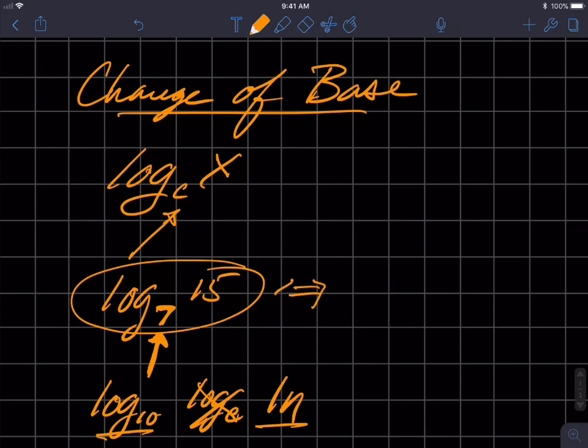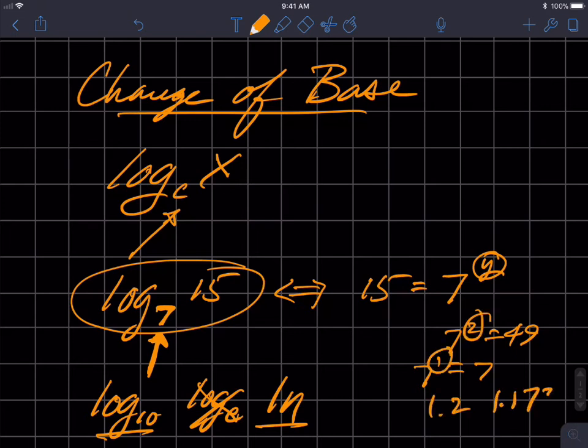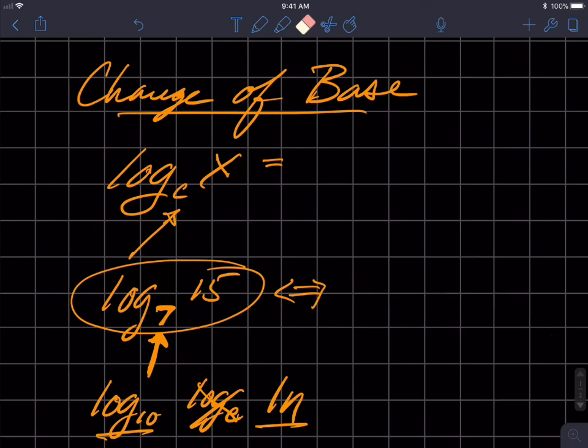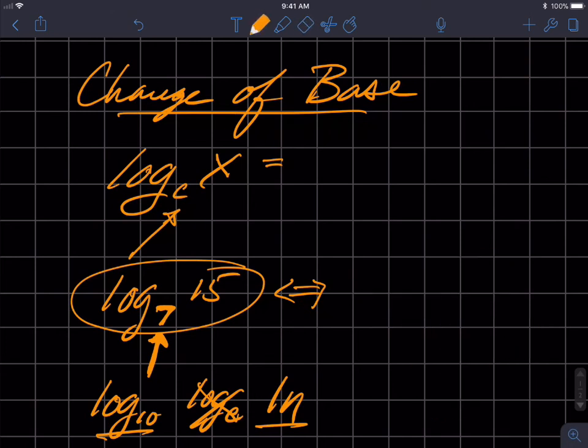So even if we change it over to exponential form, we get 15 equals 7 to the y, and I don't know what that is. Clearly, 7 squared is 49, so it's less than 2, and 7 raised to the 1 is equal to 7. So it's some value between 1 and 2, but I don't know. Is it 1.2 or is it 1.173? I don't know. And so we can't put that in our calculator, but we can put this in our calculator.